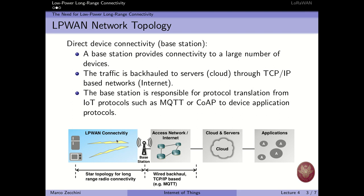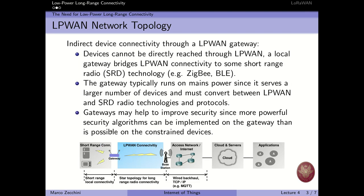Our data is transmitted to a gateway wired to the network, which can forward information to a cloud server through MQTT or CoAP. We can also have a hybrid topology where sensors connected through short-range local connectivity send data to a gateway that then communicates with another gateway through LPWAN connectivity, which is then connected to the network and transmits to the cloud.